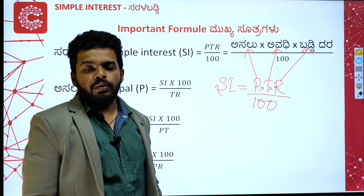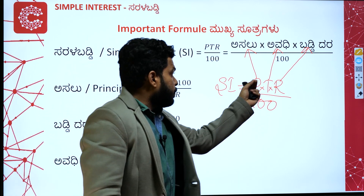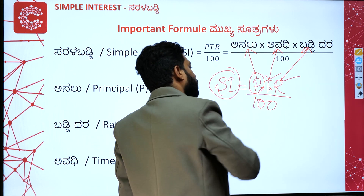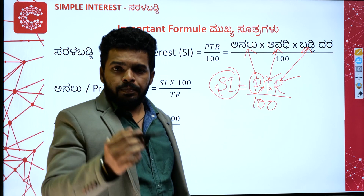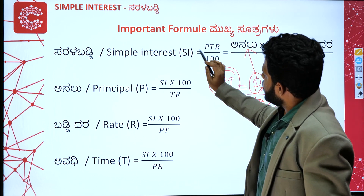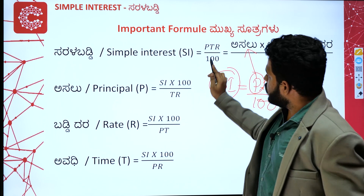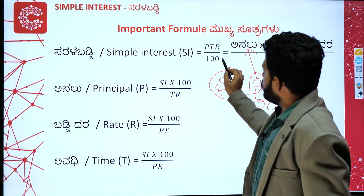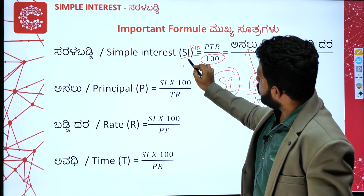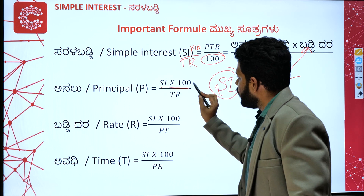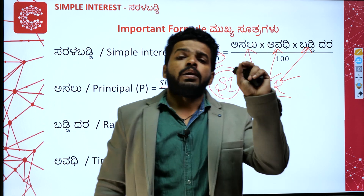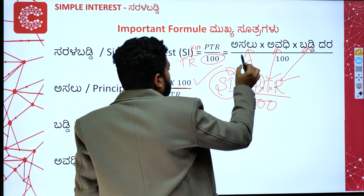Using this formula, given P, T, and R values, you can find SI easily. Also, you can derive the formula for P. P is equal to SI into 100 over T into R. Move the denominator to the numerator and the numerator to the denominator — that is, P = SI × 100 / TR.